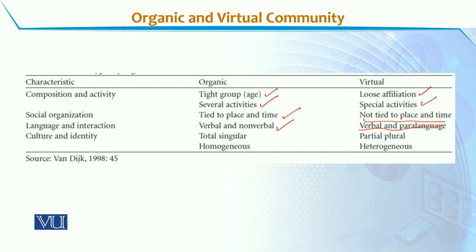और जब हम culture and identity की बात करें, ये जो organic communities होती हैं, ये homogenous in nature होती हैं और singular होती हैं, जबकि virtual communities heterogeneous होती हैं, यानि different social cultural background के लोग उसके member बन सकते हैं, और different age groups के लोग उसके member बन सकते हैं, और आप across the countries भी उसमें members हो सकते हैं. तो ये basic differences हैं physical जिसको Van Dijk organic community कहता है और virtual community में.